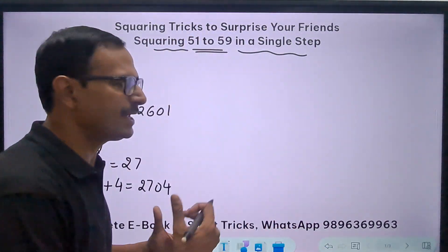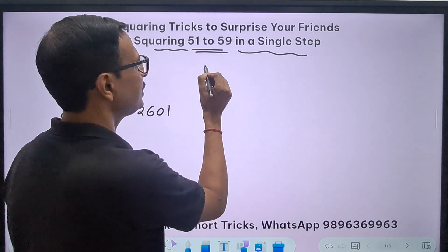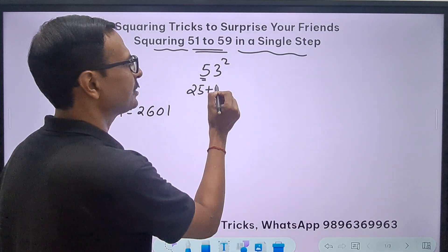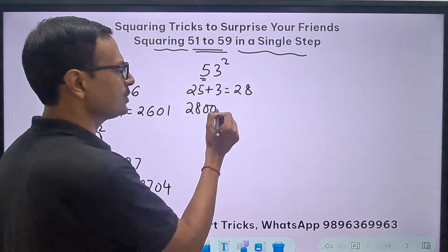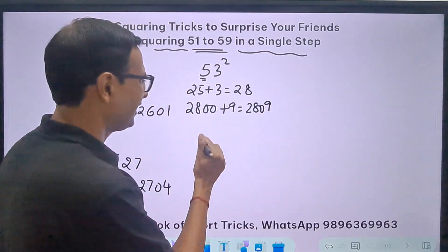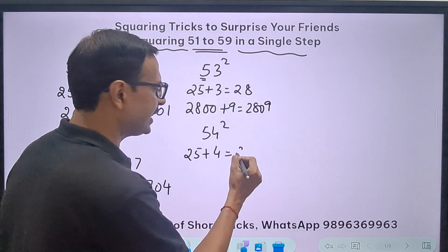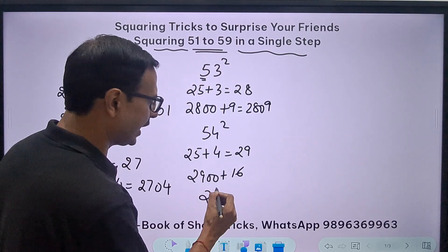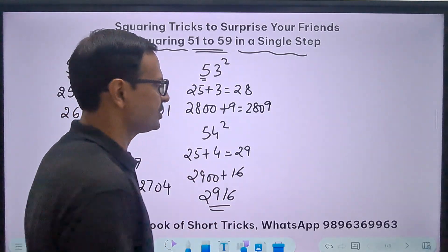You can go on and find all these squares up to 59. Let's skip the steps now and solve it in less time. If we have 53 square, I'll do 25 plus this number 3, that gives me 28. So 28 followed by two zeros, and 3 square is 9, gives me 2809. For 54 square: 25 plus 4 is 29, so 2900, and 4 square is 16, so 2916.